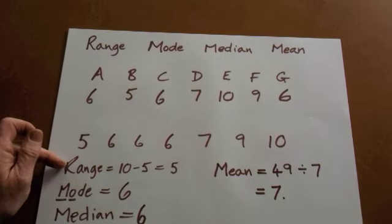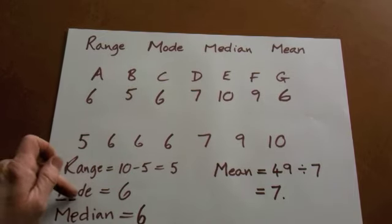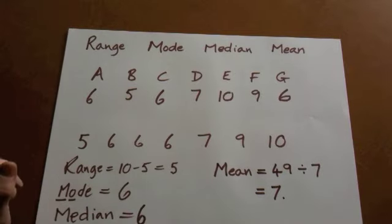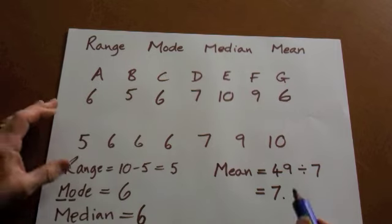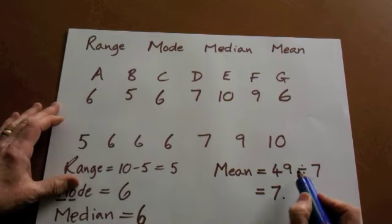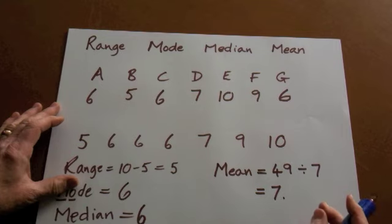So the range was five. The mode, that's the most often number, the one that comes up most often is six. The median is six, that's the middle one. And the mean is where you add them all together and divide by the number of people, and that's seven as well.